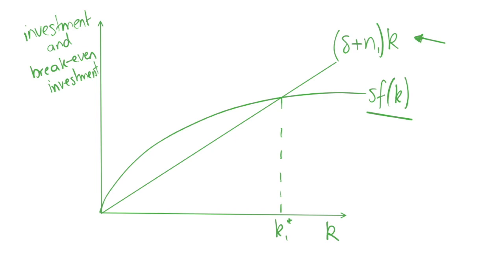On the y-axis we have investment and break-even investment. What happens if we change this exogenous population growth rate? We start at n1. If we increase n to n2, which is greater than n1, we're increasing the population growth rate.